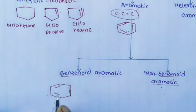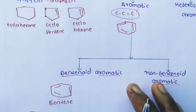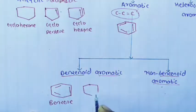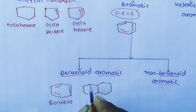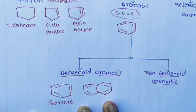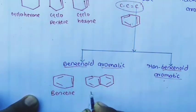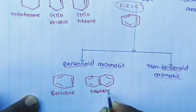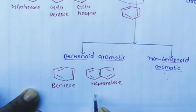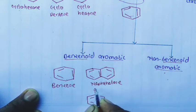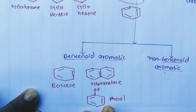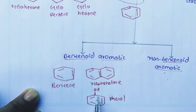For example, benzene itself is a benzenoid aromatic compound — this ring is the benzene ring. Naphthalene, where two benzene rings are joined to each other, is also a benzenoid aromatic compound. Phenol, which contains alternating carbon-carbon single and double bonds with an OH group attached, is also a benzenoid aromatic compound because the benzene ring is present.